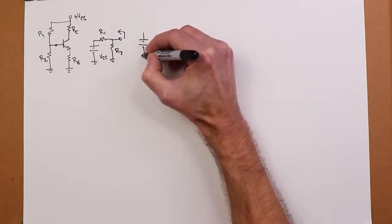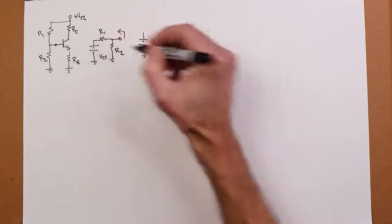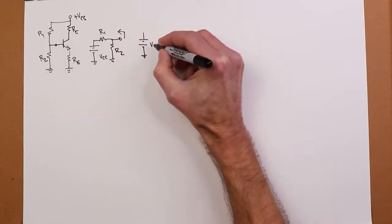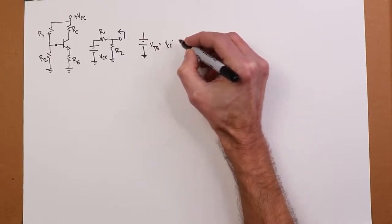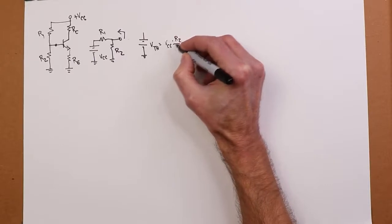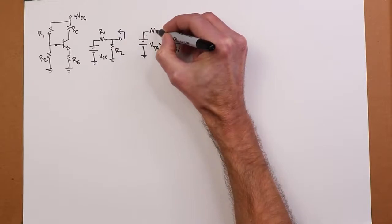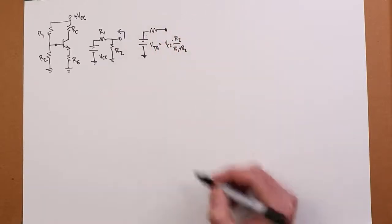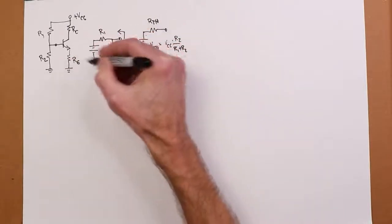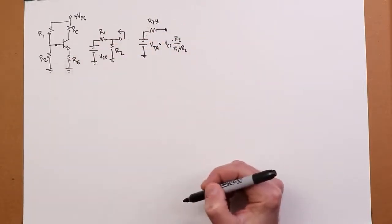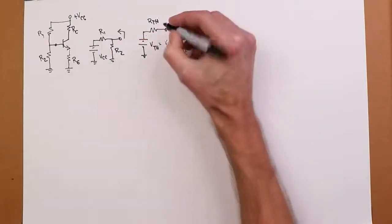The thevenin voltage source, of course, is the open circuit output voltage, which is just a voltage divider between R1 and R2. So this V-thevenin will be VCC times R2 over R1 plus R2. And the resistor, the thevenin resistance, is what we see looking in here. Replace the voltage source with its ideal internal resistance, which would be a short. So that's just R1 in parallel with R2.